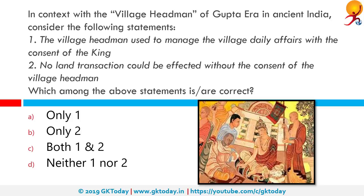In context with the village headman of the Gupta era: 1. The village headman managed village daily affairs with the consent of the king. 2. No land transaction could be effected without the consent of the village headman. Statement 2 is correct — no land transaction could be effected without consent of the village headman. However, statement 1 is incorrect because they managed village affairs with the consent of elders of the village, not the king. Only statement 2 is true.